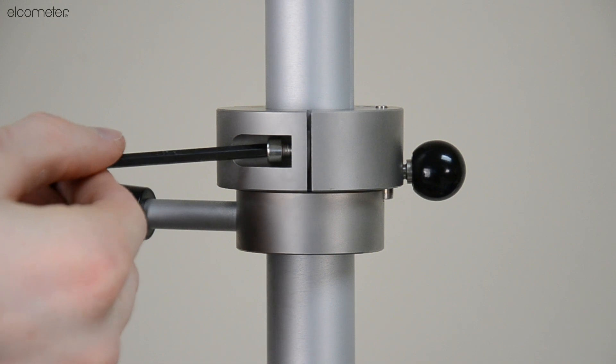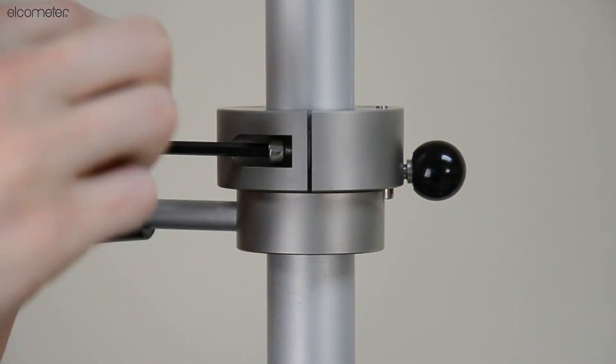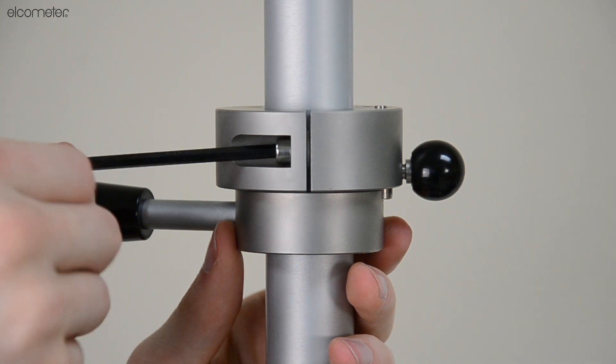Slide the release collar to your required position on the graduated tube and lock it into position by tightening the fixing screws.